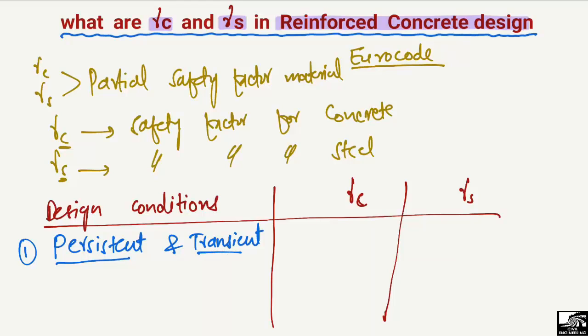For the persistent and transient design condition, we use a gamma_C value of 1.5. Most of the time we take this value because in normal use we are dealing with concrete. For gamma_S, the partial safety factor for the steel bar in such design conditions, we take the value of 1.15.